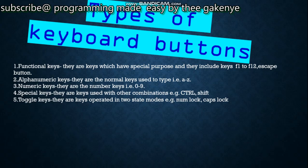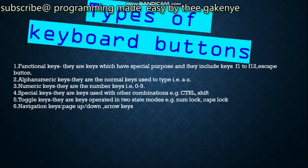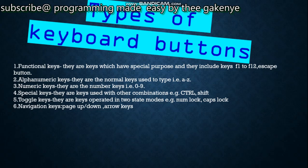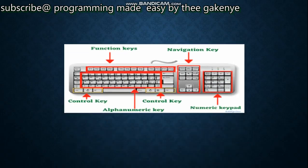Number five is the toggle keys — keys operated in two-state modes, for example Num Lock and Caps Lock. Two-state mode means that when you press Caps Lock, the letters you type will appear either in small letters or capitals. Number six is the navigational keys — keys used to navigate through a page, a good example being the arrow keys. Here is a picture of the keys showing functional keys, navigational keys, control keys, alphanumeric, and numeric keys.